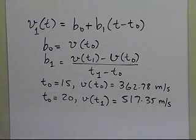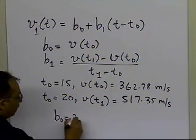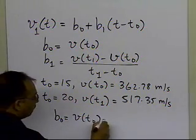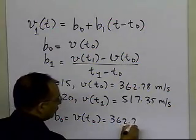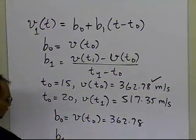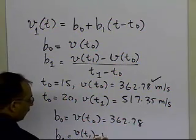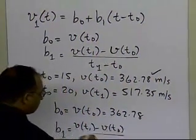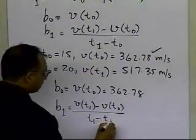Based on this information, we can find b₀ and b₁. b₀ is simply v(t₀) = 362.78. b₁ is calculated as [v(t₁) - v(t₀)] / [t₁ - t₀].